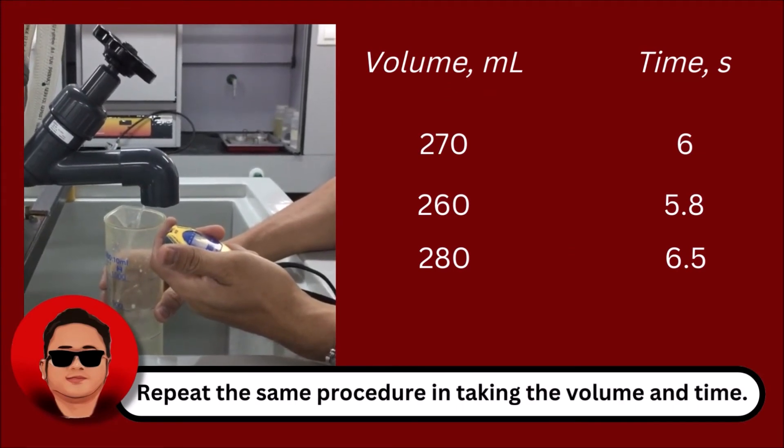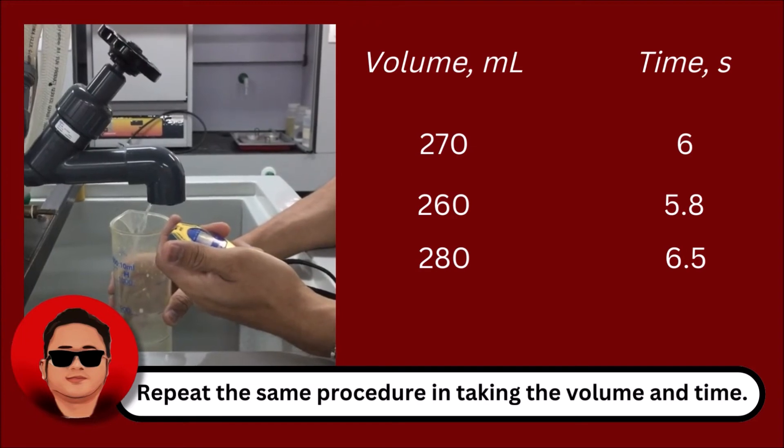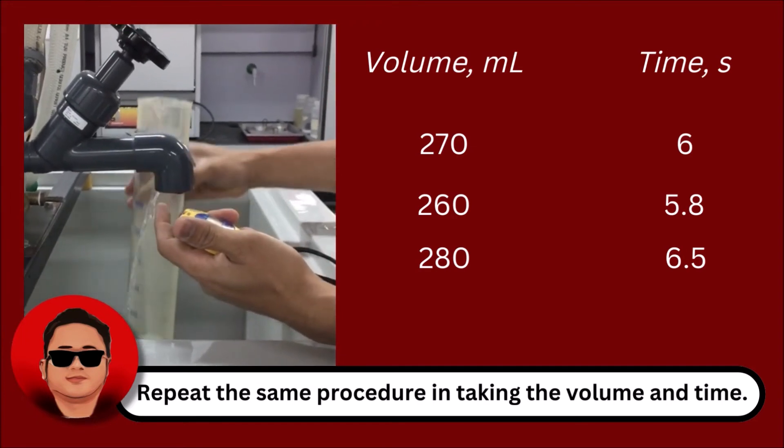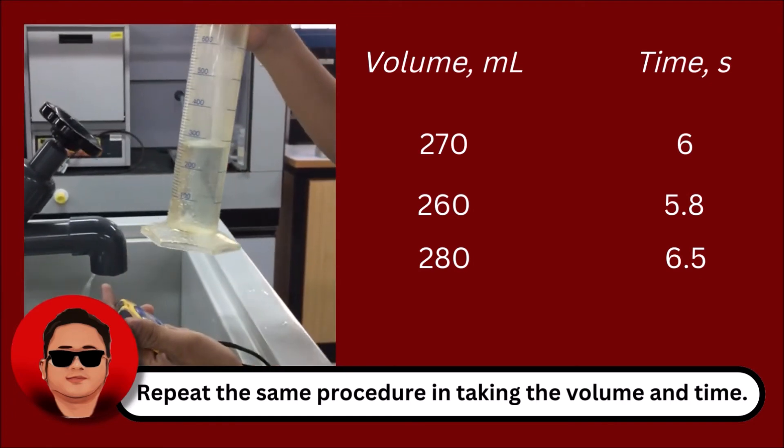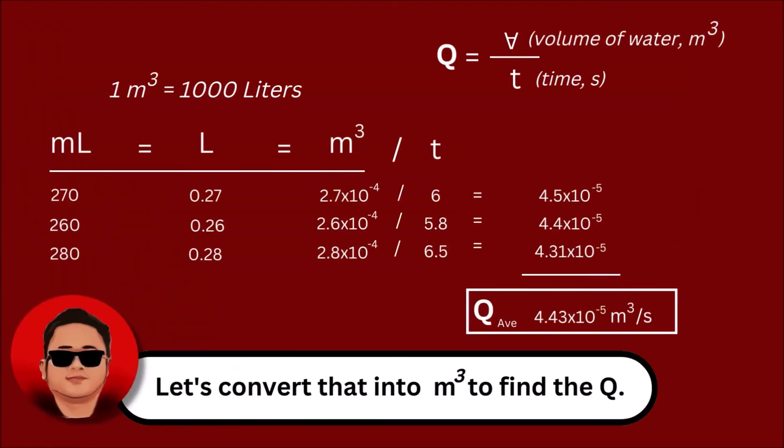Repeat the same procedure for finding the volumetric flow rate of the fluid. Divide by its time then take the average.